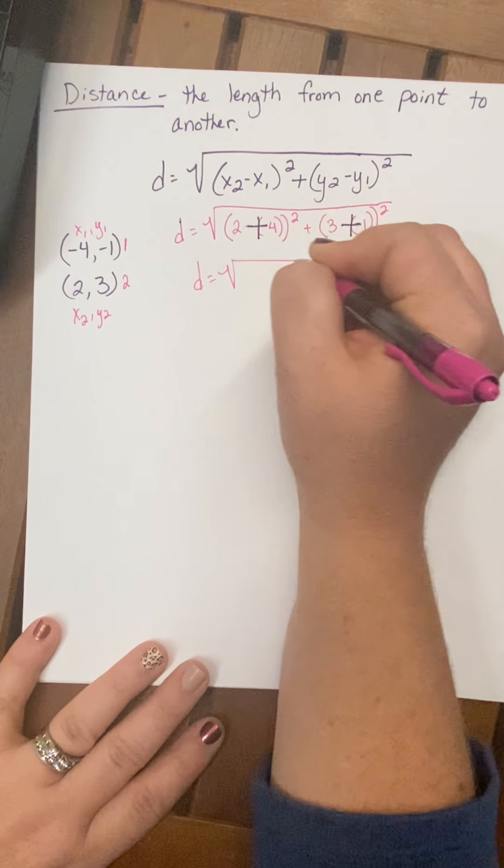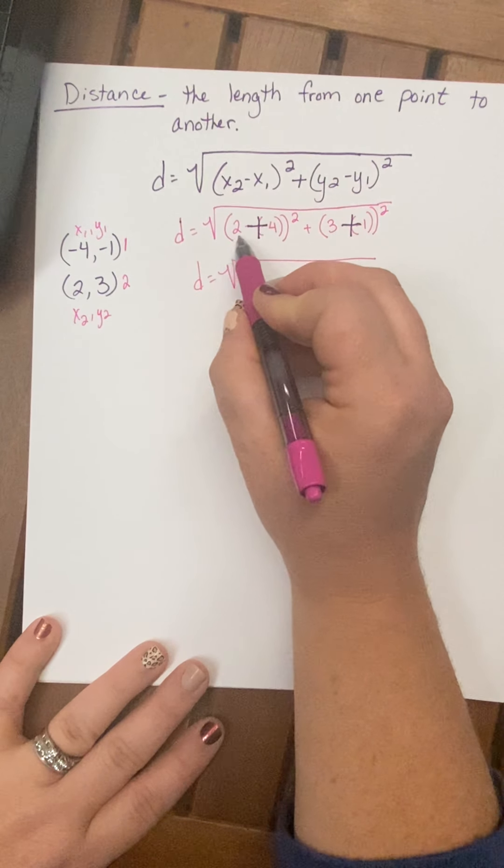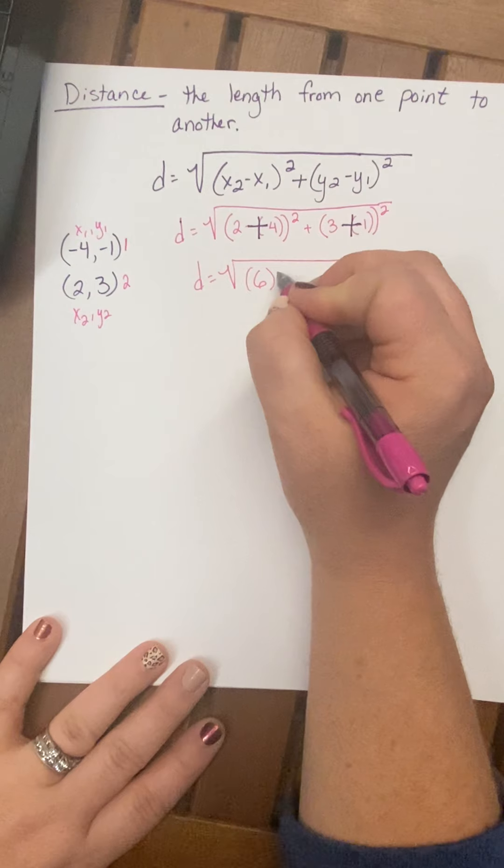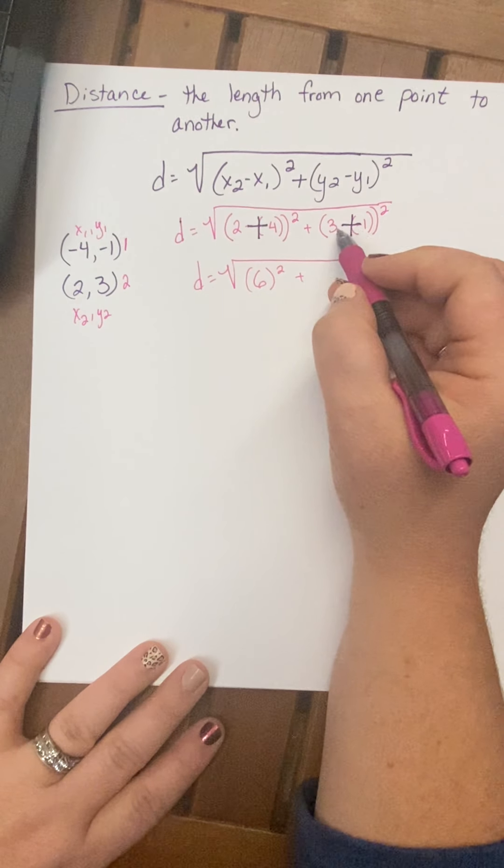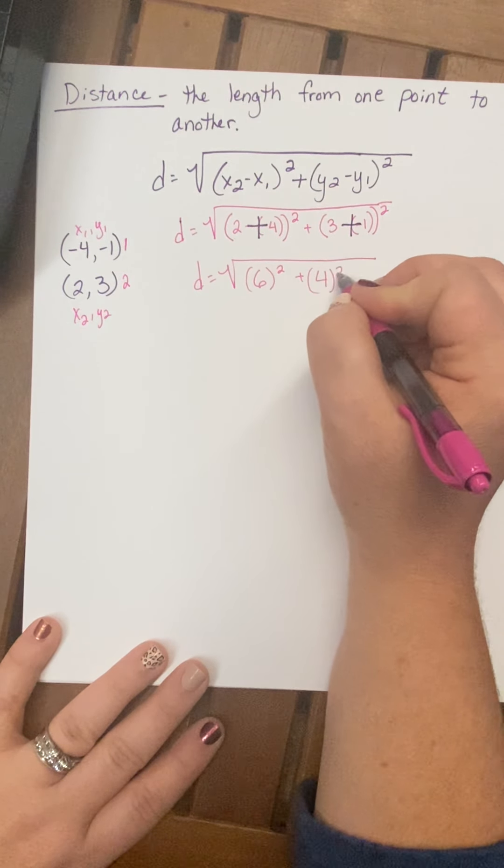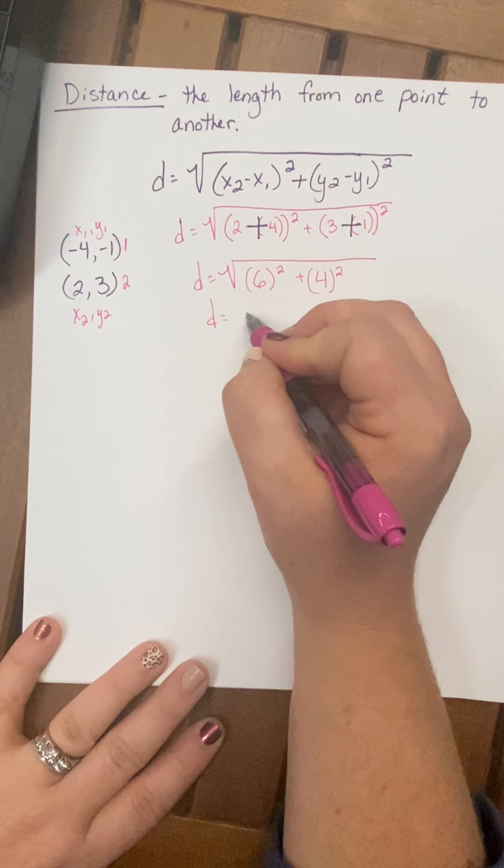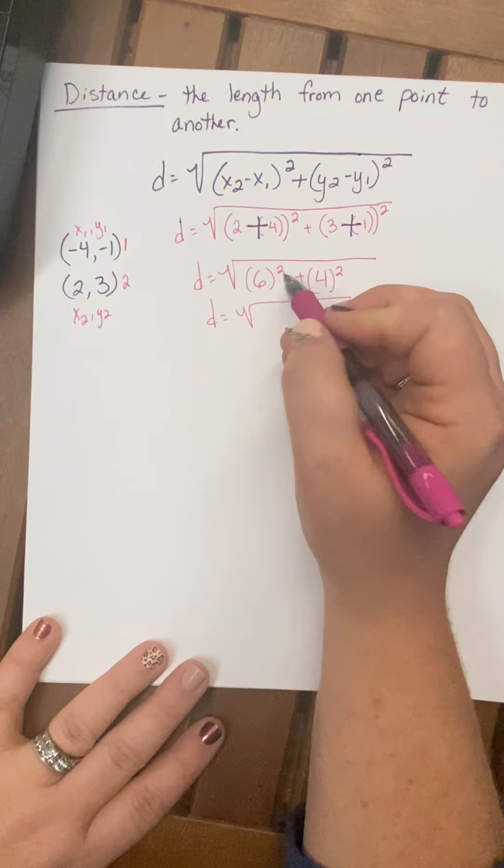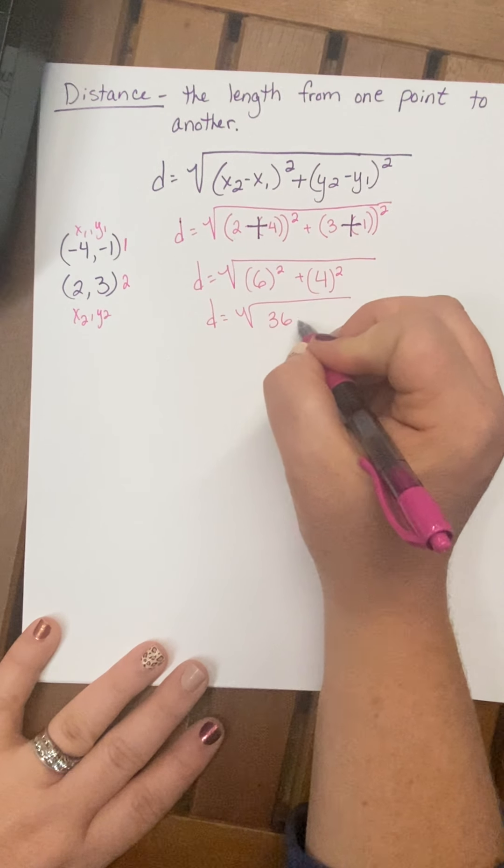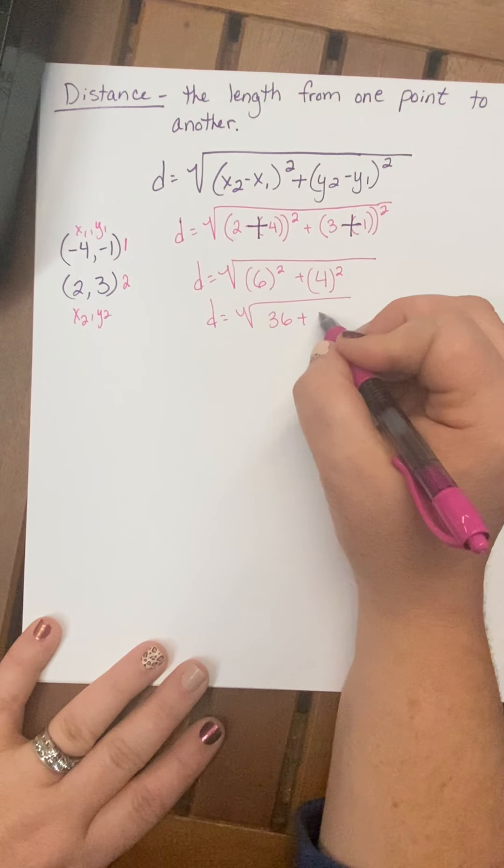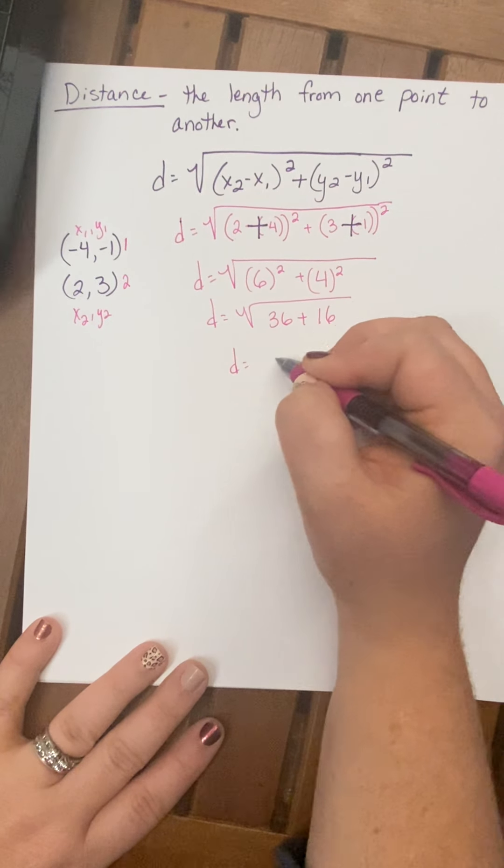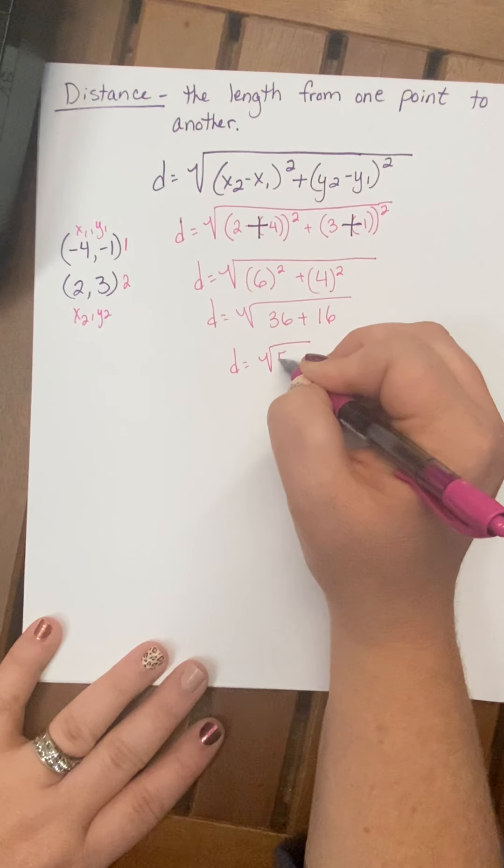So now let me work on simplifying this. So I've got 2 plus 4 is 6 squared plus 3 plus 1 is 4 squared. All right. Square root of 6 squared is 36, and 4 squared is 16.